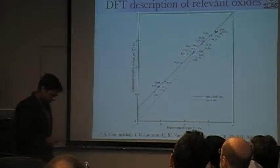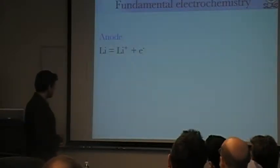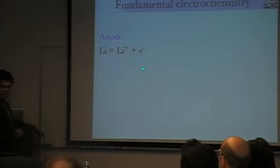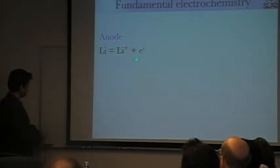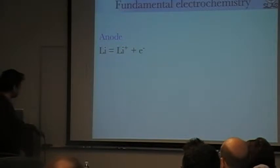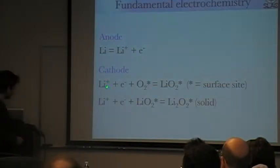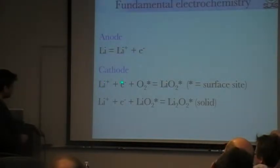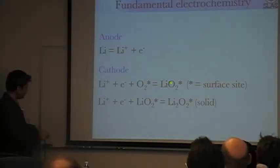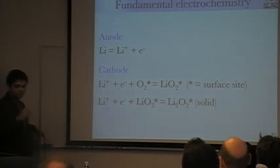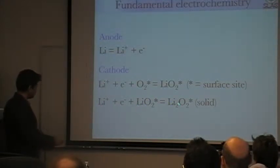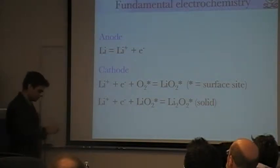Now we want to understand the growth of lithium peroxide and determine the mechanism. At the anode, Li+ and electrons are in equilibrium with lithium metal, which means I can replace the free energy of lithium-plus and electrons with the free energy of lithium metal. At the cathode, we add lithium-plus and an electron sequentially to oxygen to form LiO2 on a surface site — on an already nucleated film of lithium peroxide. Then another addition of lithium-plus and electrons forms Li2O2, growing thicker and thicker solid films since lithium peroxide is insoluble.